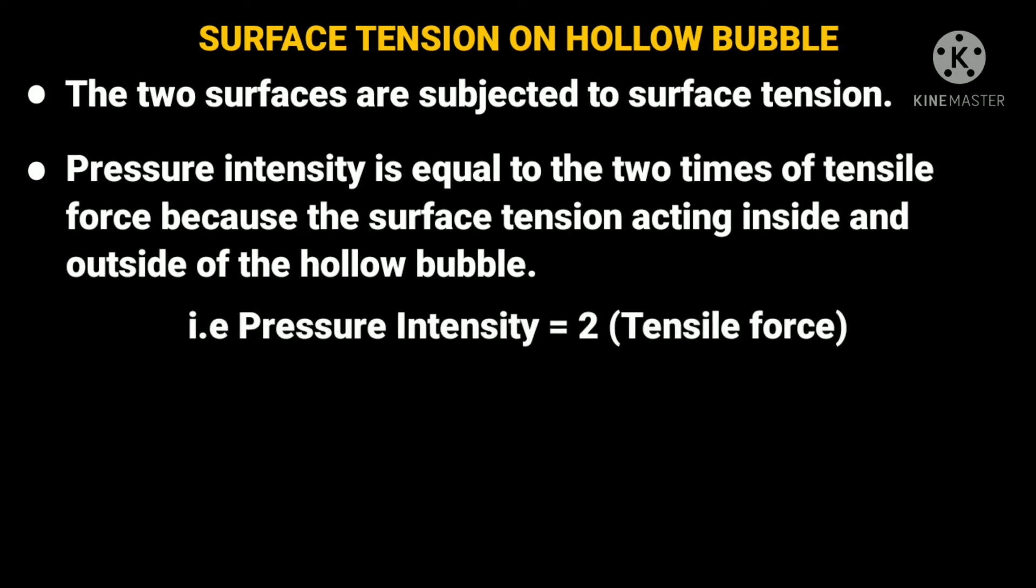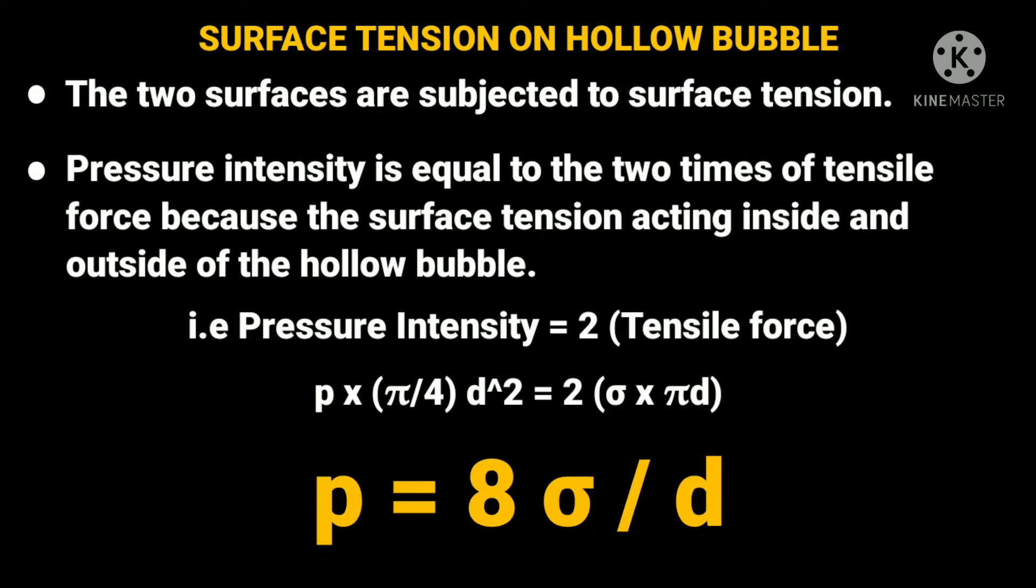Then, p into pi d squared by 4 is equal to 2 into sigma into pi d. After simplification, we will get p is equal to 8 sigma by d.